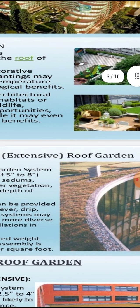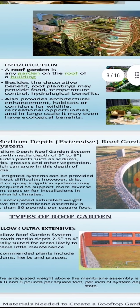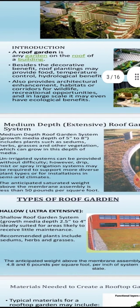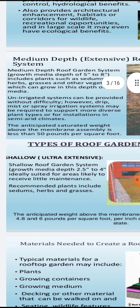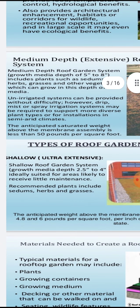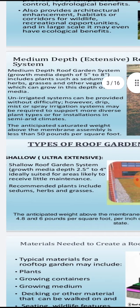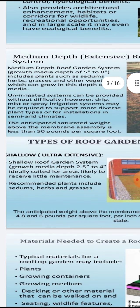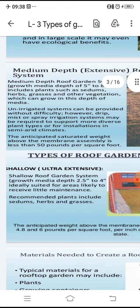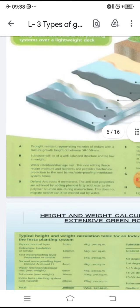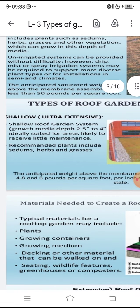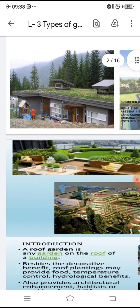I have selected some photographs for our study. Regarding the medium of depth, how the roof garden system is generally done — certain plants like sedum or grasses are used. Grasses provide lawns for greenery, so here we are observing this is a very good part in this one.